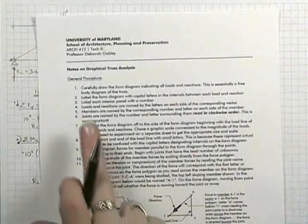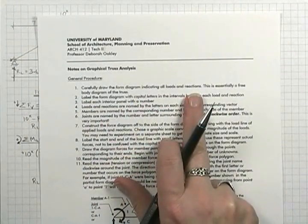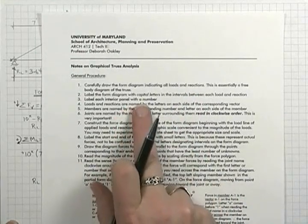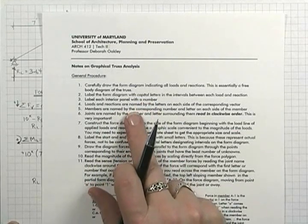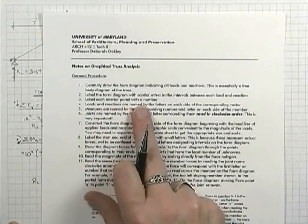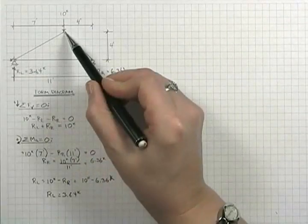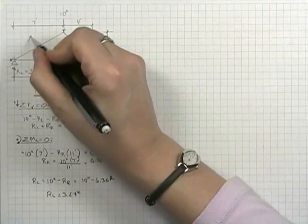So that really is completing step one. We've indicated all the loads and the reactions. Next, we want to label the form diagram around the perimeter with capital letters in the intervals between each load and reaction. That means the spaces between them. And then we label each interior panel with a number. So the space between the left-hand reaction and the ten kip force is one region. And we call that region A.